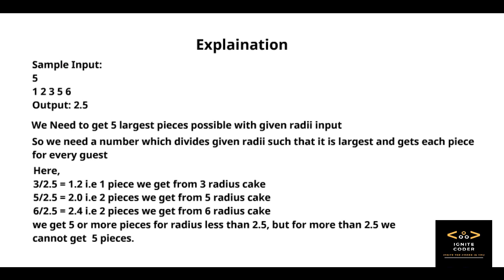So 1 plus 2 plus 2 equals 5. Any number less than 2.5 will give us a number greater than 5, like it can serve more than 5 guests.